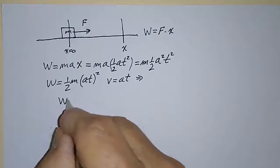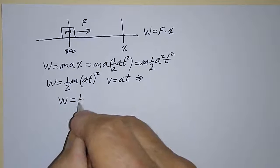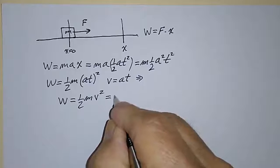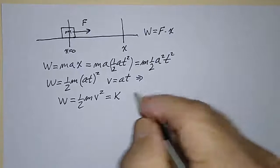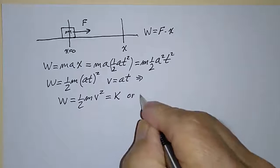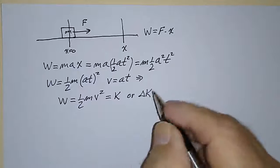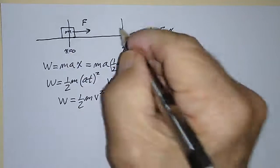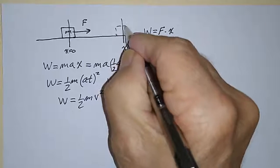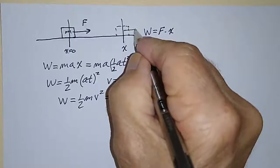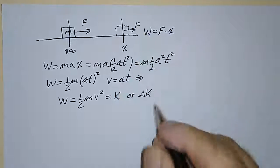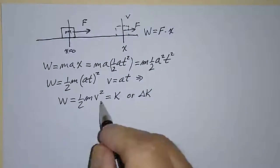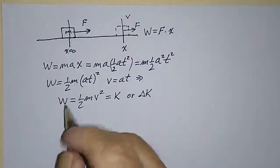the work is equal to one-half M V squared, which is equal to the kinetic energy, or the change in kinetic energy. We started off with it at rest, so the kinetic energy was equal to zero. And now by the time we get over here under this constant force, it's moving with some speed V, so it has kinetic energy one-half M V squared. So